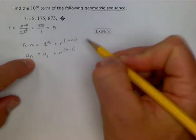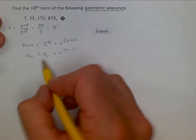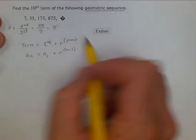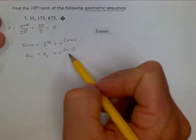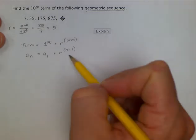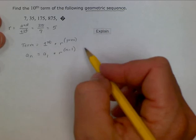And that's the general explicit formula for a geometric sequence. And now we can plug in what we do know in order to find the specific explicit formula for this sequence, and then find our tenth term.